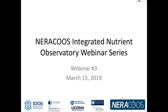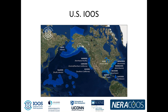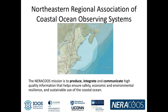I want to start with a brief overview of NIRACOOS. NIRACOOS is part of the U.S. Integrated Ocean Observing System, or the U.S. IOOS. The IOOS consists of 11 regional associations, and there is also a U.S. IOOS program office housed in NOAA. The program consists of a partnership of at least 17 federal agencies, with many more partnerships at the regional level. The NIRACOOS mission is to produce, integrate, and communicate high-quality information that helps ensure safety, economic, and environmental resilience, and sustainable use of the coastal ocean.